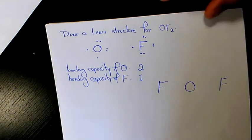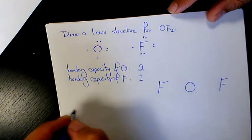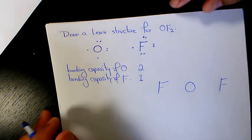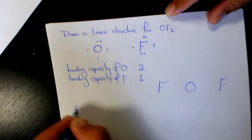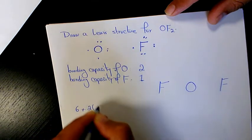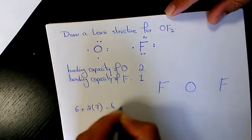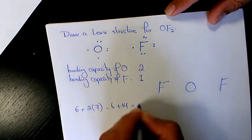Now what I need to do is calculate the number of available valence electrons in this compound. So oxygen is six, and we have two fluorine and each of them are seven, so it's going to be six plus fourteen, which is going to be twenty.